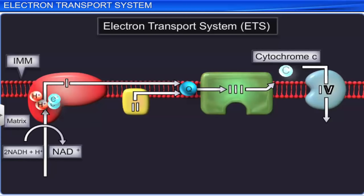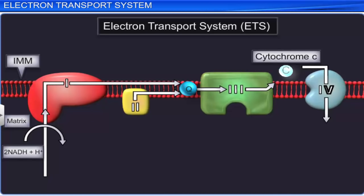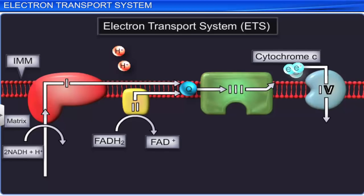Electrons from NADH+ H+ are transferred through complex 1 to ubiquinone, and protons are moved from the matrix of the mitochondria to the inter membrane space. In the same way, electrons from FADH2 are transferred through complex 2 to ubiquinone, and protons are moved from the matrix of the mitochondria to the inter membrane space. Ubiquinone transfers the electrons to complex 3, which transfers the electrons to complex 4 through cytochrome C. Here too, some protons are moved from the matrix of the mitochondria to the inter membrane space.